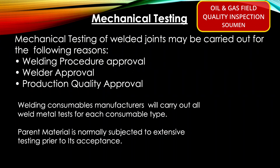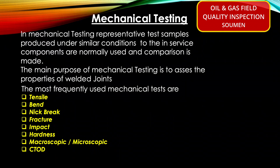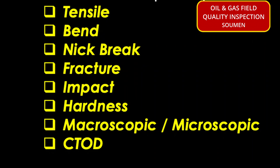If it is for checking the quality of production welds, it is called a production test coupon. Welding consumables manufacturers carry out all the weld metal tests for each consumable type to certify the quality of their consumables. Parent material is normally subjected to extensive testing prior to its acceptance. The types of mechanical tests we have are: tensile, bend, nick break, fracture, impact, hardness, macroscopic or microscopic, and CTOD.